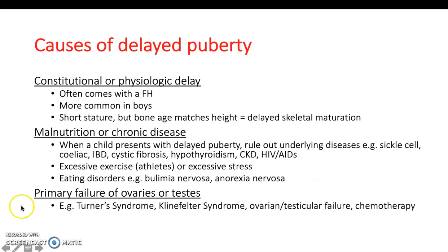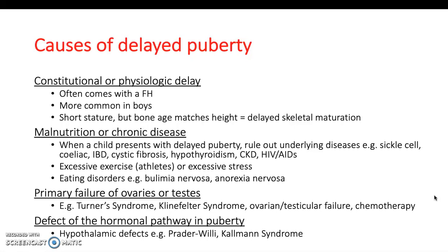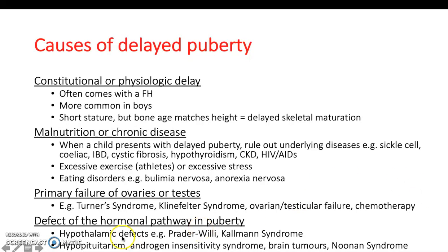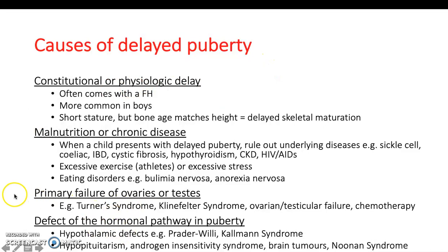Primary failure of the ovaries or testes — for example, Turner or Klinefelter syndrome, ovarian or testicular failure, or chemotherapy — can cause delayed puberty. There may also be a defect in the hormonal pathway for puberty, such as hypothalamic defects including Prader-Willi or Kallmann syndrome, hypopituitarism, or Noonan syndrome. Chronic disease causes delay by activating the hypothalamus and the start of the hormonal signalling pathway in puberty, which impacts on the hypothalamic-pituitary axis.